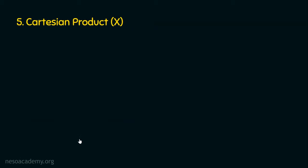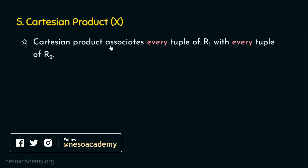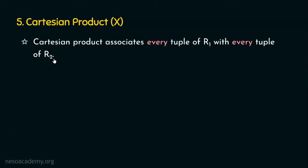What is the Cartesian product? As the name itself says, it performs a product operation between two relations. The Cartesian product associates every tuple of relation one with every tuple of relation two. For example, if relation one contains five tuples and relation two contains seven tuples, the Cartesian product between these two relations will give 35 tuples — that is R1 multiplied by R2, or simply R1 Cartesian product R2.